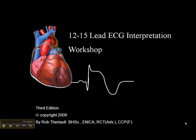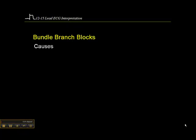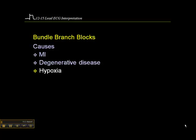Let's talk about bundle branch blocks starting on page 32 of your workbook. The causes include old myocardial infarcts or acute MIs, degenerative heart disease, hypoxia — which can cause bundle branch blocks usually in elderly patients with extensive cardiac disease — and electrolyte imbalances.